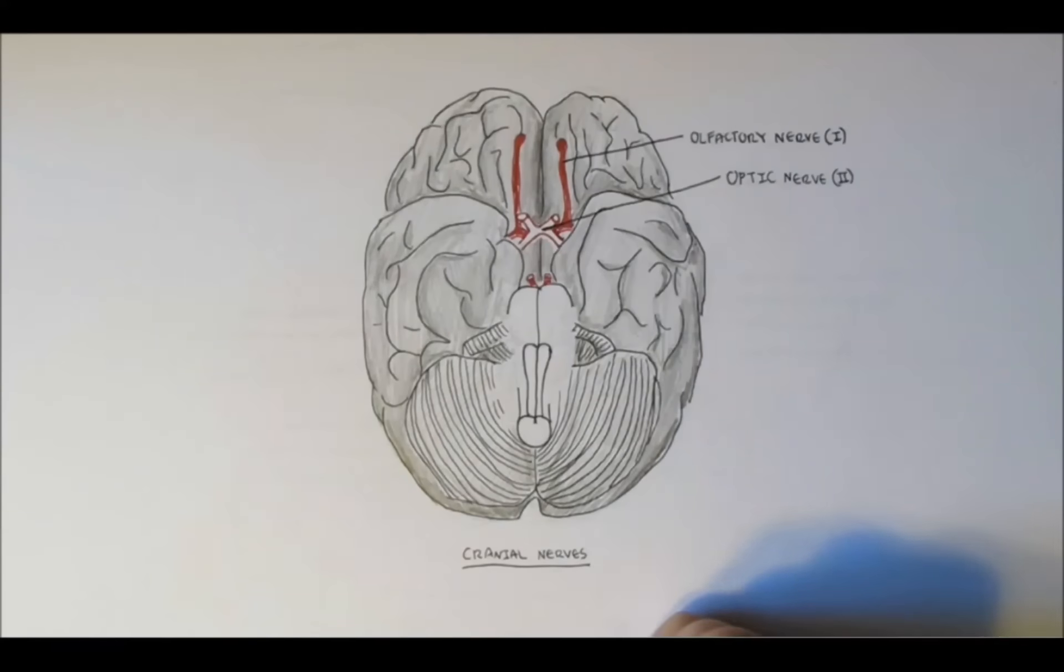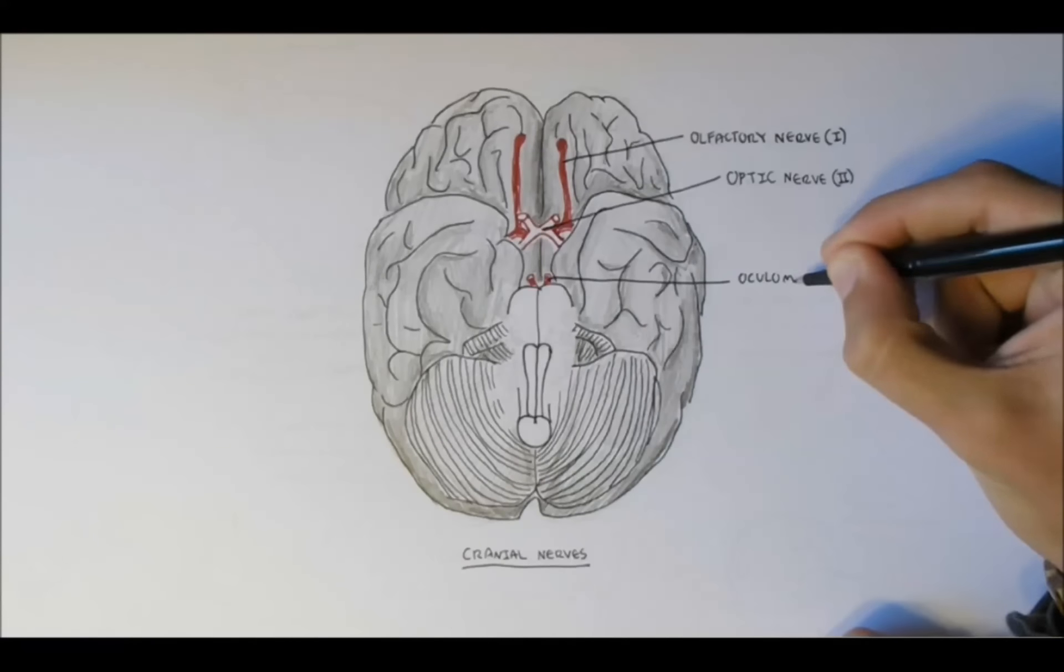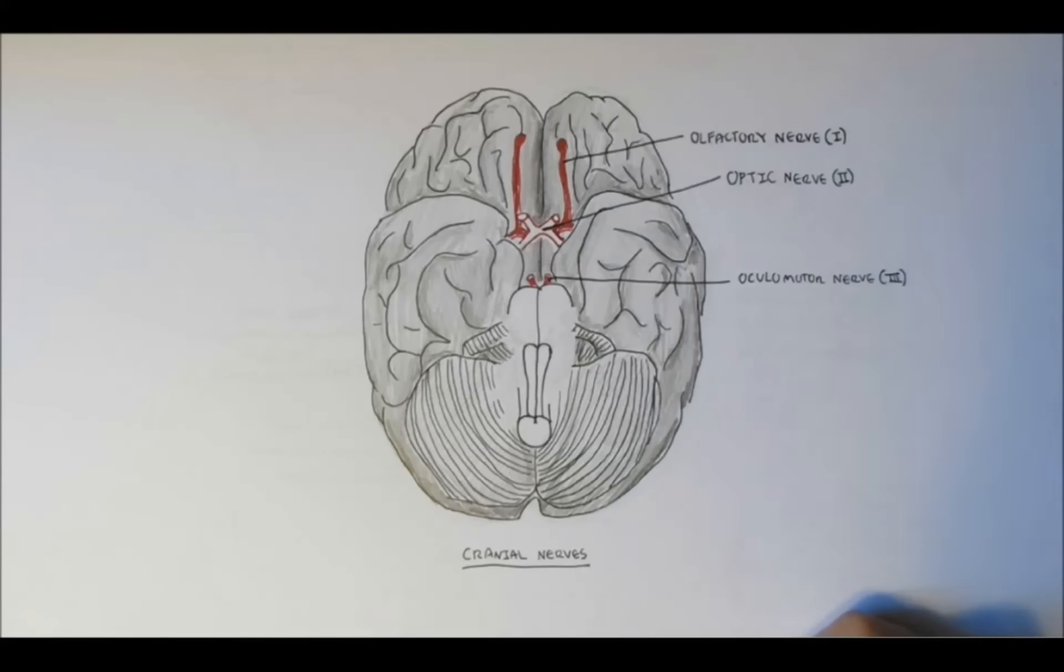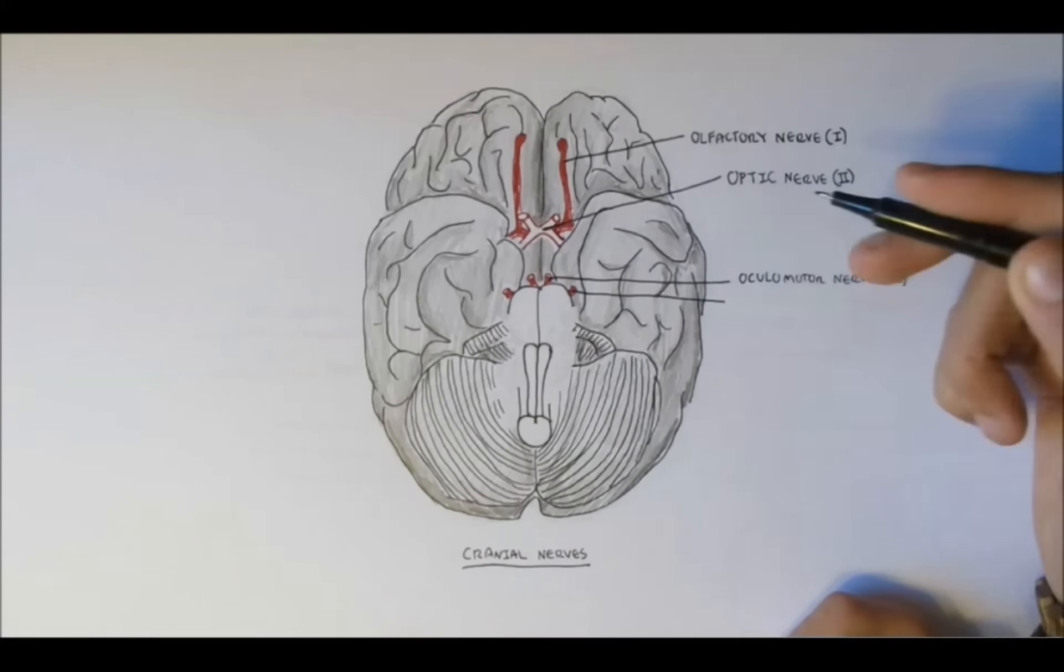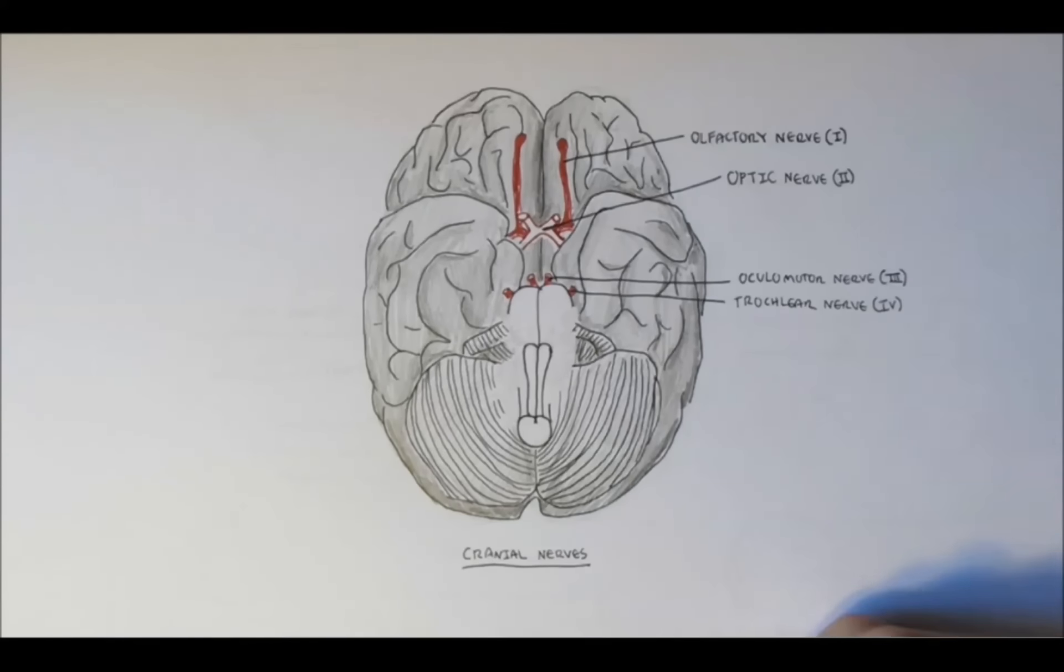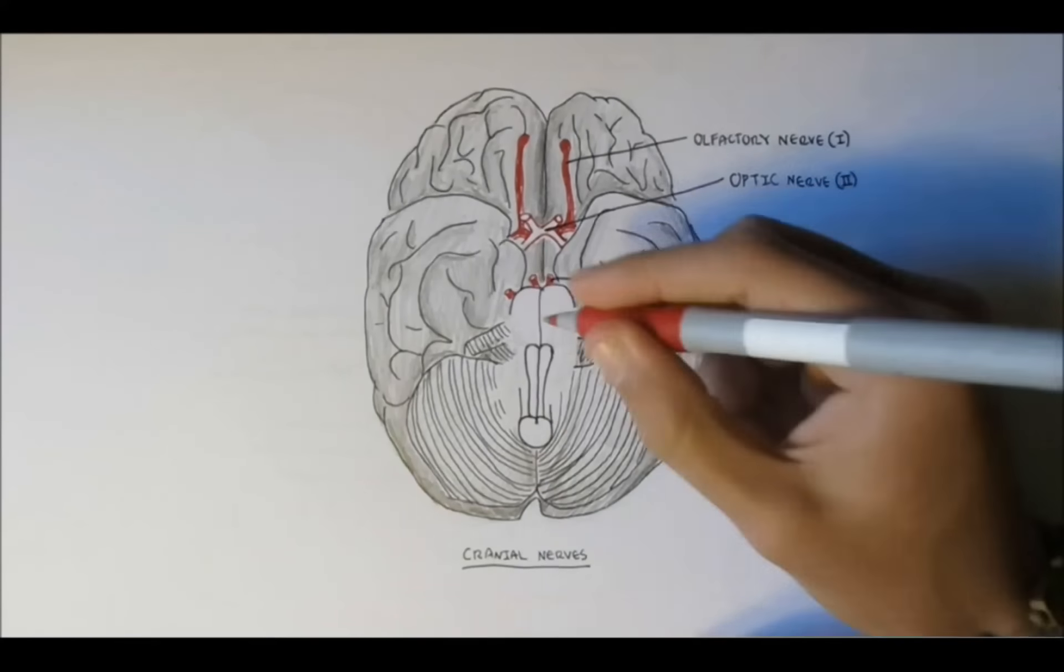Just where the midbrain is located, protruding from the midbrain, is the oculomotor nerve, nerve 3. And also around the midbrain, we have the trochlear nerve, nerve 4, cranial nerve 4.